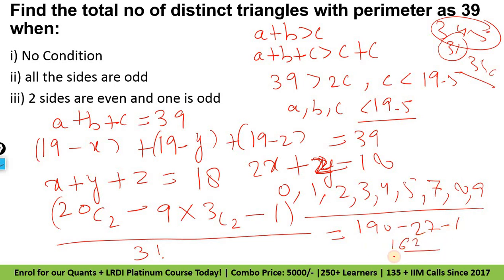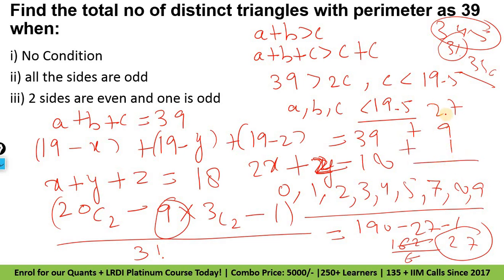So this gives us 162 divided by 6, which is 27. So 27 is the answer for this question — no condition ke liye 37 hoga answer. 27 is scalene plus 9 isosceles, and equilateral bhi isosceles ke andar aata hai — toh only pure isosceles, 1 equilateral hogi — toh 37 total triangles aayenge jab koi condition nahi di.